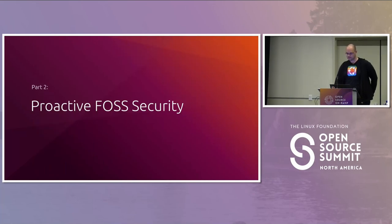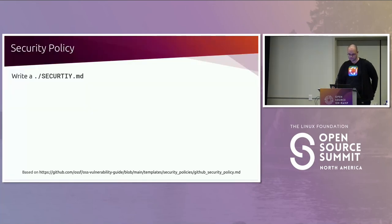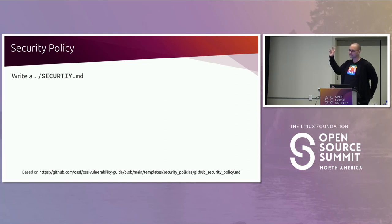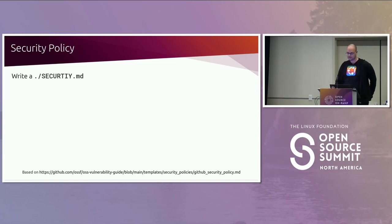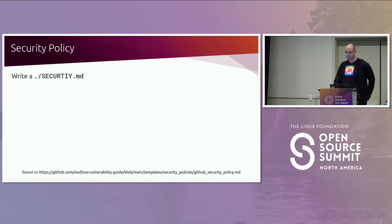Now, proactive FOSS security. A security policy is the most important security document a software project can have. Without it, security bugs might be reported publicly or not at all. A security policy doesn't have to be fancy or formal — just take five minutes and explain how you want others to contact you, or extend it to include timelines to set the reporter's expectations.